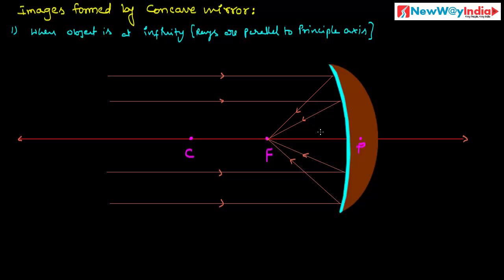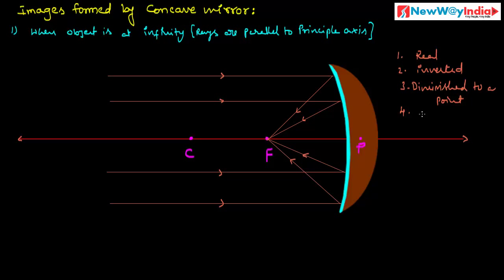What are the characteristics of this image? First, it is a real image. It is inverted. It is diminished to a point. The image is formed at the principal focus in front of the mirror. These are the characteristics of the image.